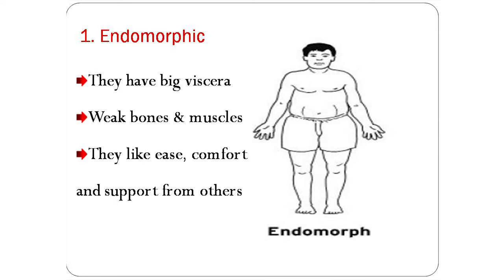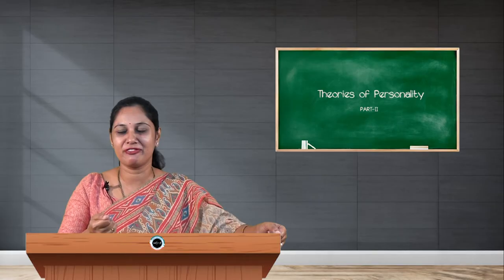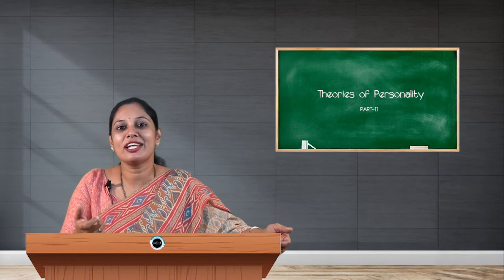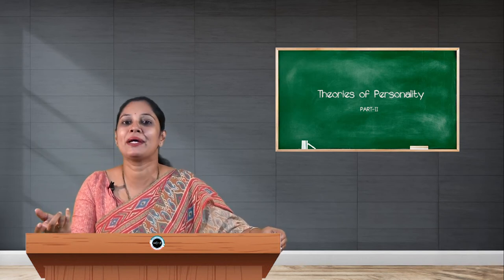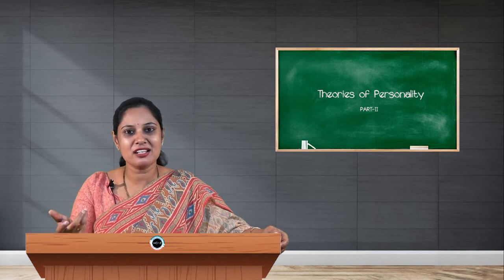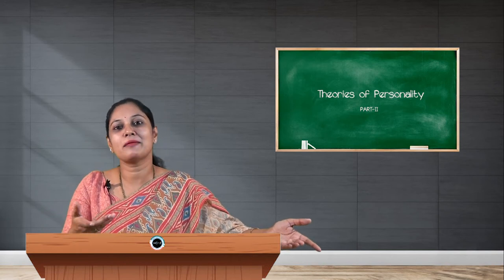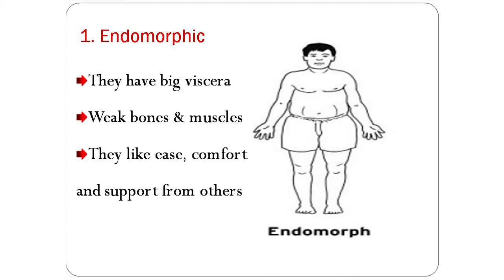Based on the body type, we can say that they are endomorphs. Endomorphs are people who have big viscera — viscera refers to the internal organs of a human being. If people are big and hefty in nature, usually their internal organs are also big. People with big internal organs are usually part of the endomorphic type. These are people with very weak bones and muscles.